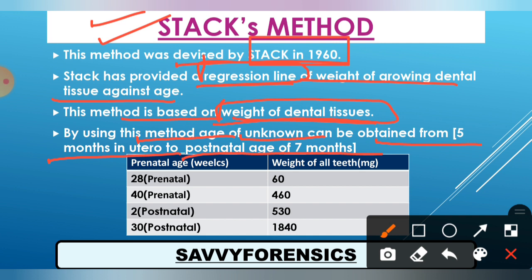Here is the chart or table. It shows prenatal age in weeks. If we talk about a prenatal stage of 28 weeks, the weight of dental tissues is 60 mg. At a prenatal stage of 40 weeks, the weight is 460 mg. At 2 weeks postnatal, the weight is 530 mg. And at 30 weeks postnatal, the weight is 1840 mg.